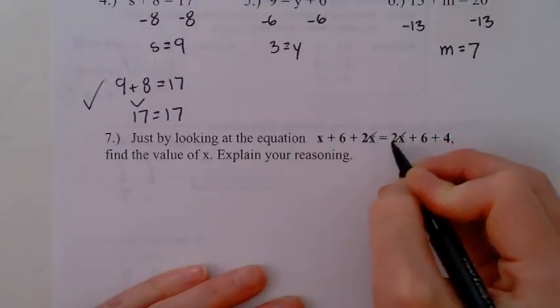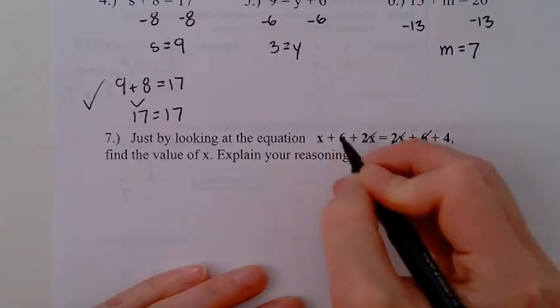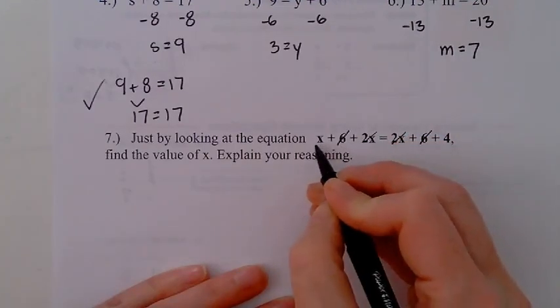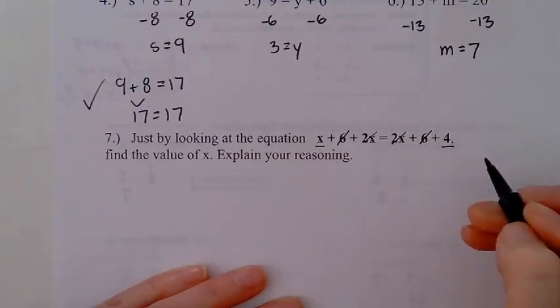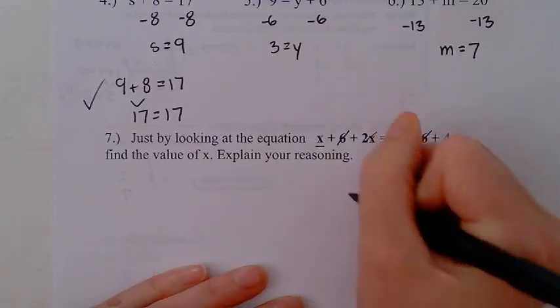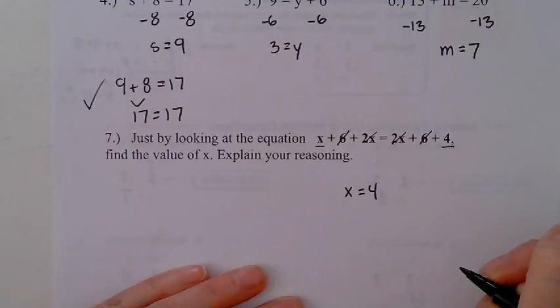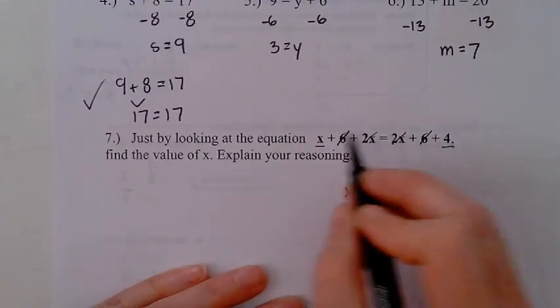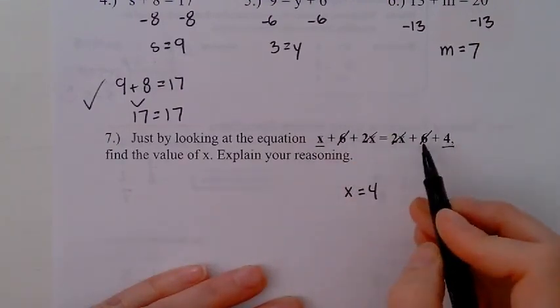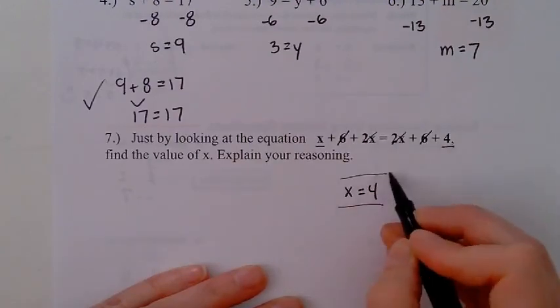I'm left with x and I'm left with 4. So, basic reasoning: x is going to equal 4. That's all it's left. That's the only thing that's different on each side, so those things have to be together because we've already realized those cancel out and those cancel out, and we're left with x equals 4. Good job, guys.